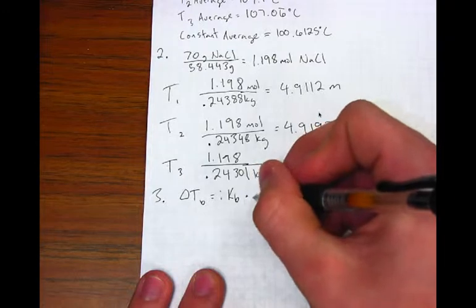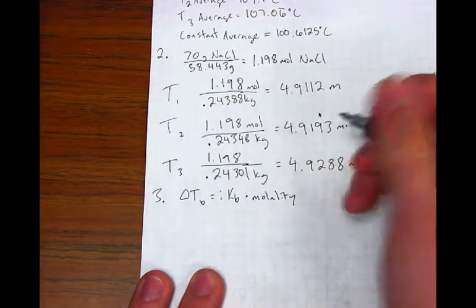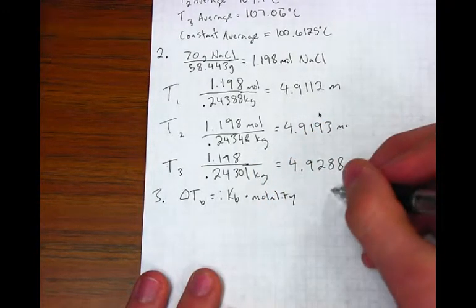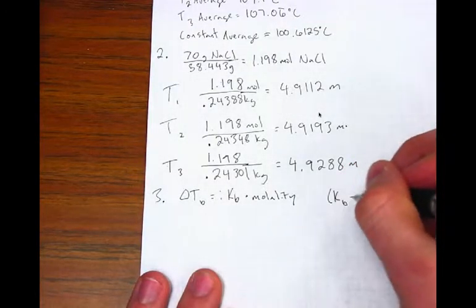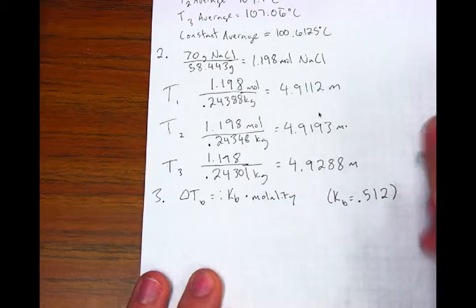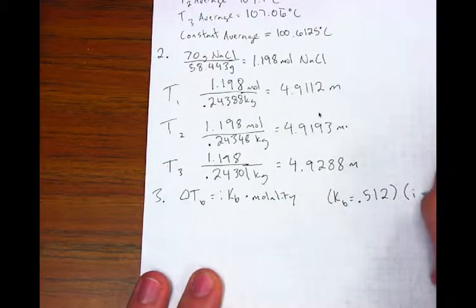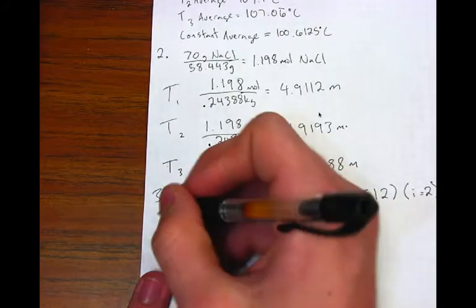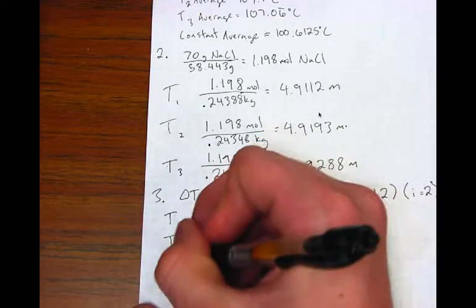Step number 3: Plug each of the molalities that you calculated into the boiling point elevation equation. The change in TB equals i times Kb times molality, where TB is the change in boiling point, i is the Van't Hoff factor, 2 in this case, and the Kb for water is 0.512.